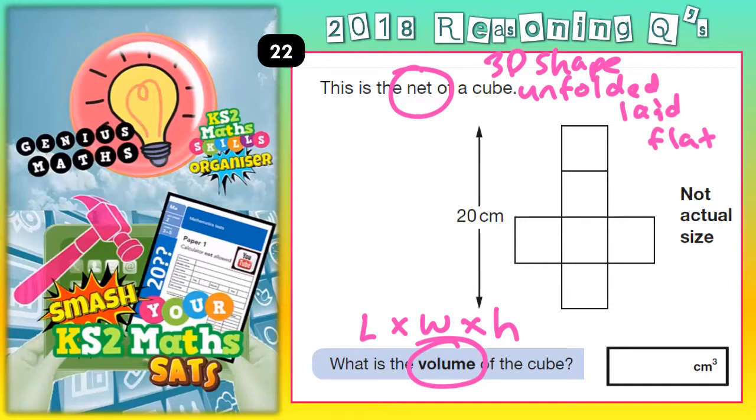So if we can find out the length, width, and height of a cube, then we can work out the volume. Remember, in a cube all the sides are the same. All the faces are the same. So the length, width, and height are all the same number.